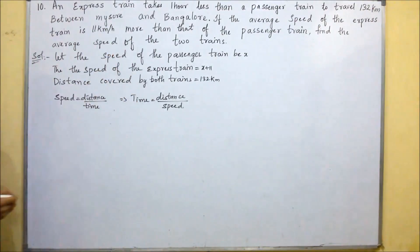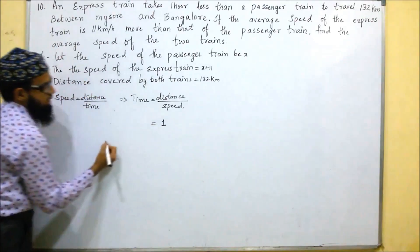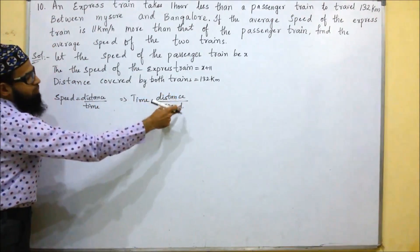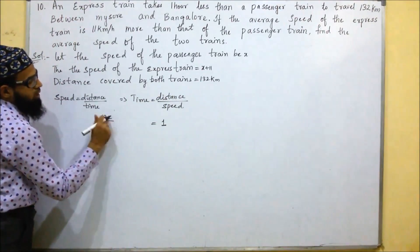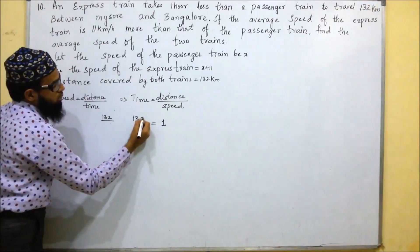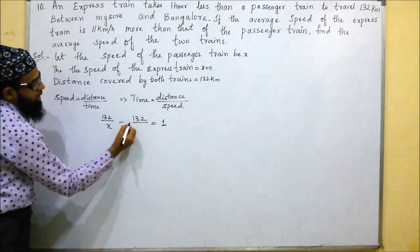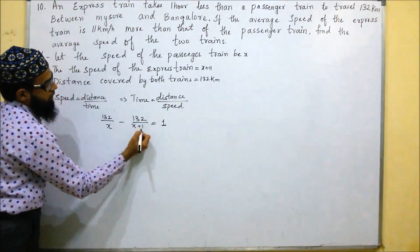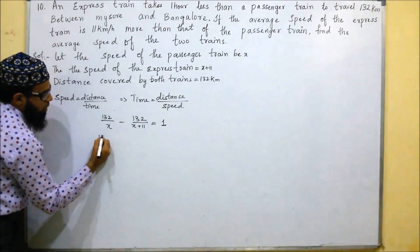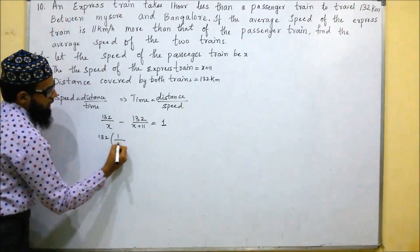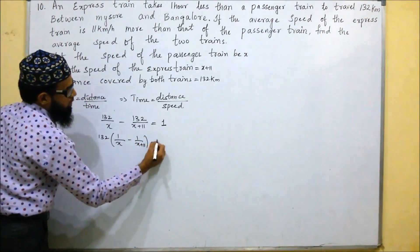The express train has taken 1 hour less. So using time equals distance divided by speed, the distance is 132 for both trains. The passenger train has taken more time, so we write: 132/x minus 132/(x+11) equals 1. Taking 132 as common: 132 times (1/x minus 1/(x+11)) equals 1.